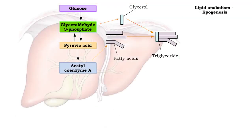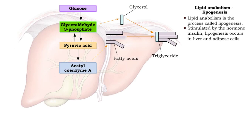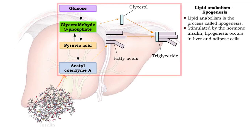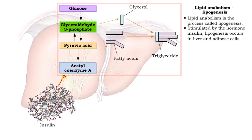Lipid anabolism is known as lipogenesis. The process, stimulated by insulin, takes place in liver and adipose cells.